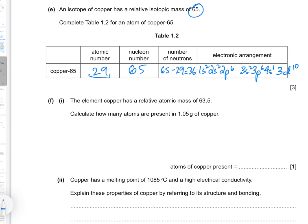The electronic arrangement uses the fact that it has 29 electrons. Note that the 3d orbitals are filled before 4s in copper — a similar pattern is observed in chromium, where you have 4s¹ and 3d⁵ instead of the expected 4s².